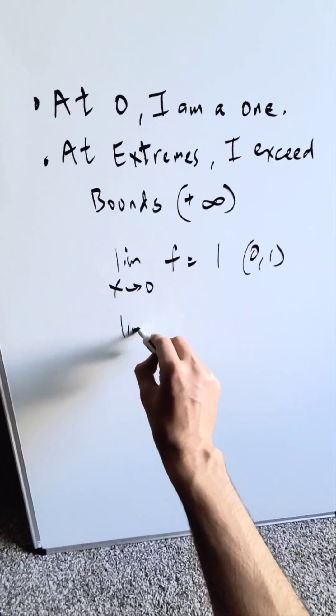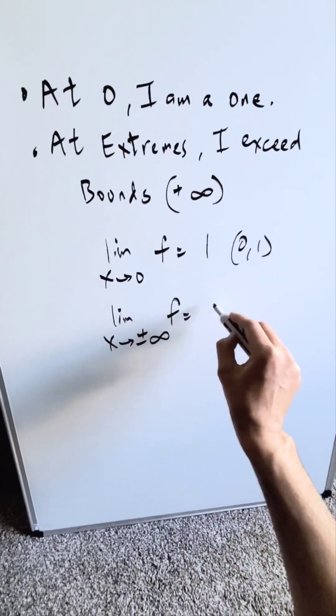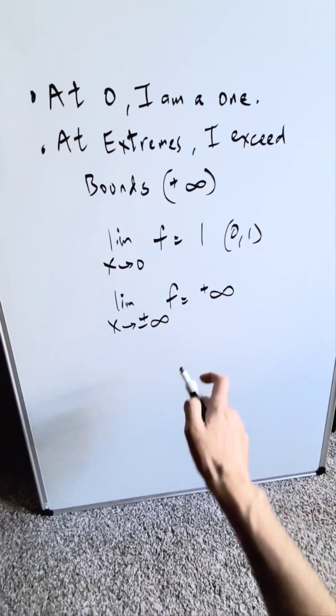Clue number 2, at extremes. It doesn't say what extremes, so you can assume both positive or minus infinity. Your function exceeds bounds in the direction of positive infinity.